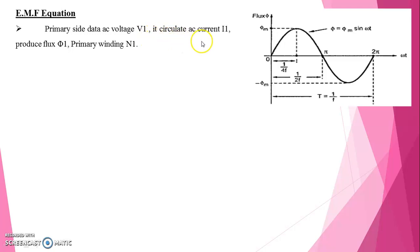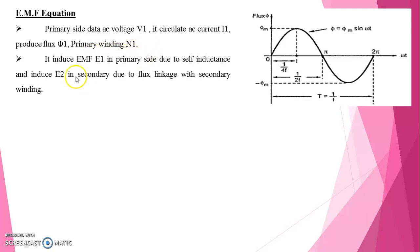Primary side data AC voltage V1, it circulates AC current I1. V suffix 1 and I suffix 1. Produce flux phi 1 and the primary winding N1. It induces EMF E1 in primary side due to self-inductance and induces E2, EMF E2 in secondary due to flux linkage with secondary winding.